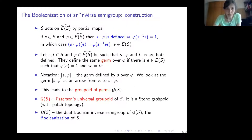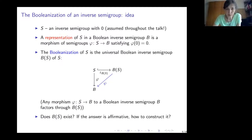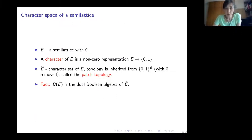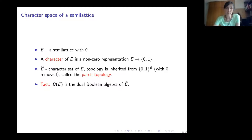Let us first consider the case of semilattices, where the answer is simple. We consider the set of characters, where a character is a non-zero representation into the two-element Boolean algebra {0,1}. The topology on the character set is inherited from the product topology {0,1}^E, called the patch topology. The resulting space is a Stone space, so by classical Stone duality it has a dual Boolean algebra of compact opens, which is precisely the Booleanization of the given semilattice.